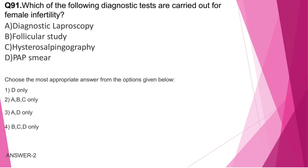Question number 91: Which of the following diagnostic tests are carried out for female infertility? A: Diagnostic laparoscopy — done to confirm conditions like endometriosis, tubal block, etc. B: Follicular study — done to check conditions related to ovary. C: HSG — done to check tubal patency. D: Pap smear — this is a screening test for cervical cancer, not a diagnostic test for female infertility. So A, B and C are the diagnostic tests; the correct answer is option 2.